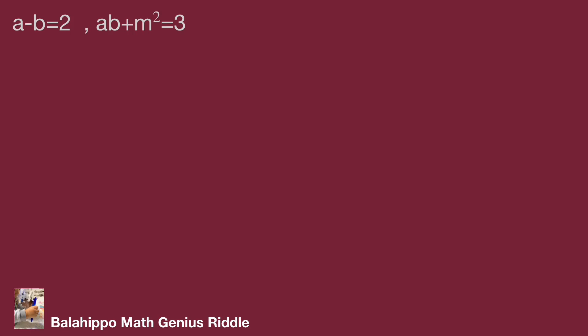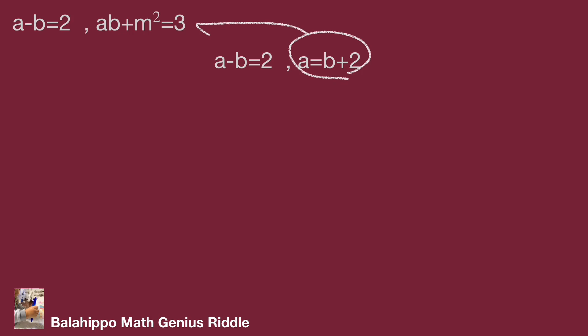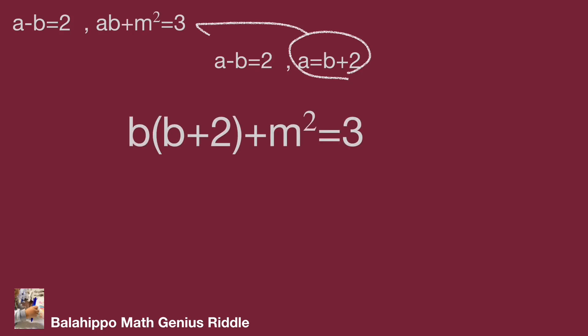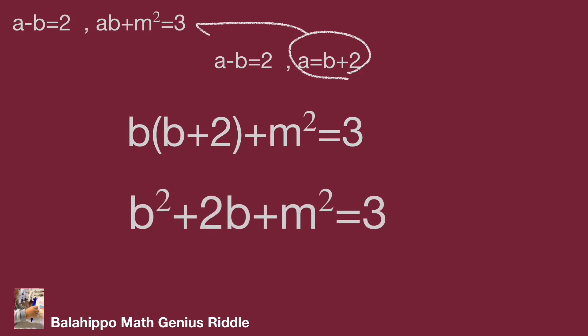Given the equation a minus b equal to 2, move b to the right side. We get a equal to b plus 2. Substitute a by b plus 2 into the equation ab plus m squared equal to 3. The new equation becomes b multiplied by bracket b plus 2 bracket plus m squared equal to 3. Adjusting gives b squared plus 2b plus m squared equal to 3.